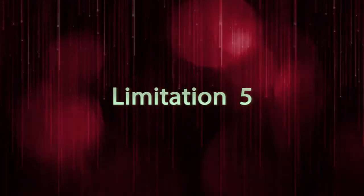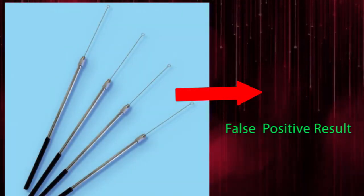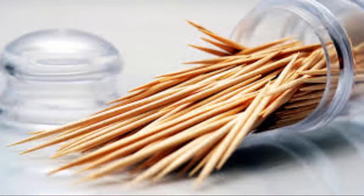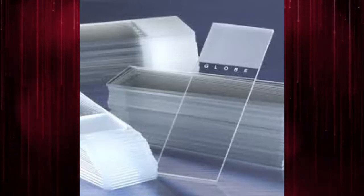Limitation Number 5: Use of a nichrome or other iron-containing loop may yield false positive reactions. Therefore platinum loops, toothpicks, or corner of the slide are recommended.